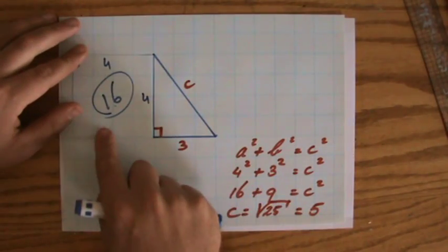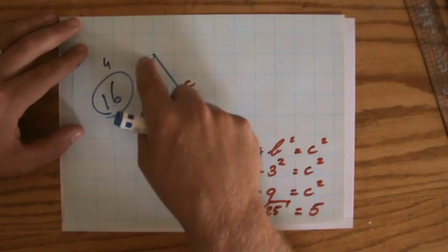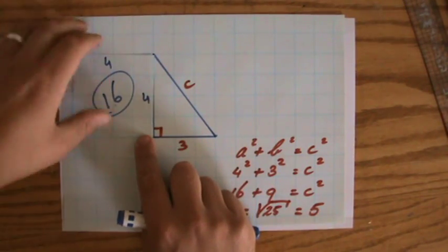Because it's 1, 2, 3, 4, 5, 6, 7, 8, 9, 10, 11, 12, 13, 14, 15, 16 of those little squares.